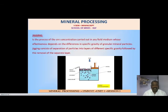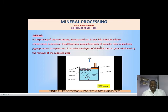Next we will see the jigging process. As shown, separation is based on specific gravity — heavier material comes down and lighter mineral goes up. By this process we segregate or separate the gangue from the concentrated ore minerals.